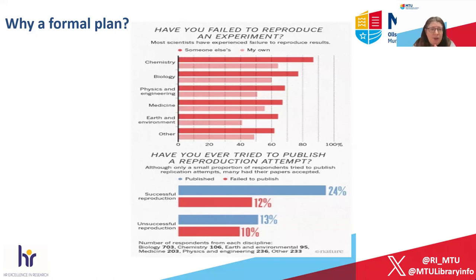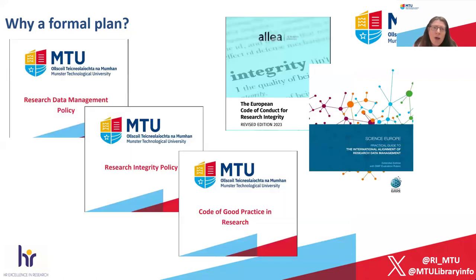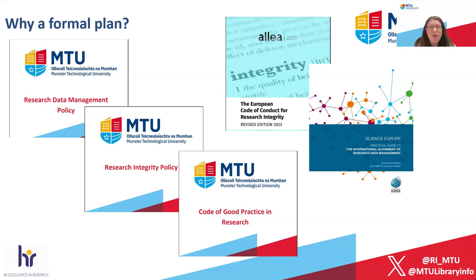Some of the issues with not having data managed correctly or stored correctly and not being able to revisit it include a reproducibility crisis across the entirety of research. One famous study from Nature showed that in a sample of roughly 1,500 researchers, 70% of them were unable to reproduce somebody else's research. Quite alarmingly, 50% of them on average were unable to reproduce their own research after the fact and after publishing it.